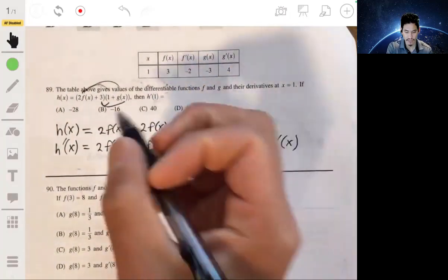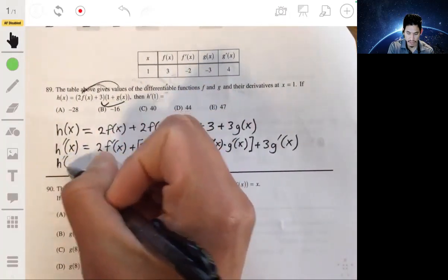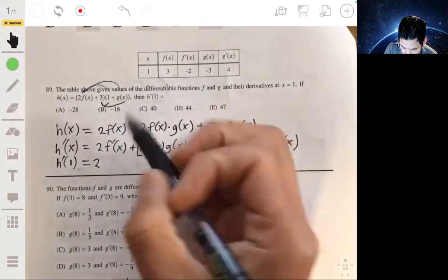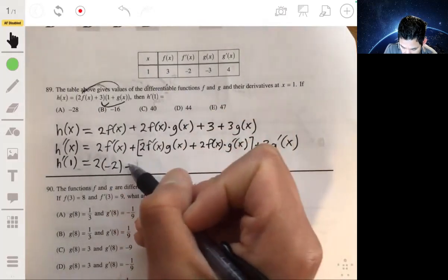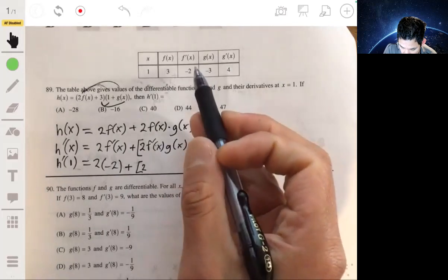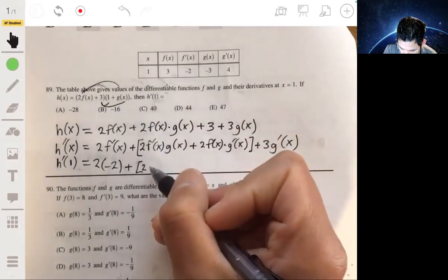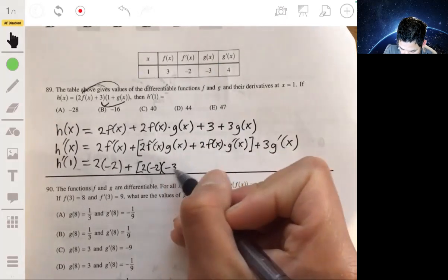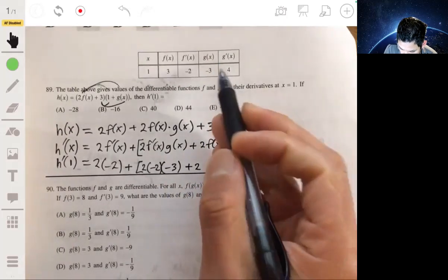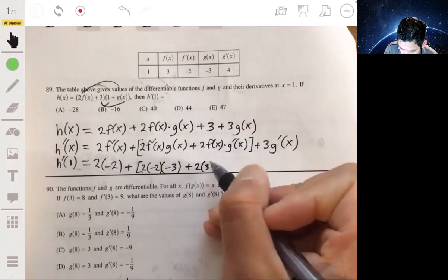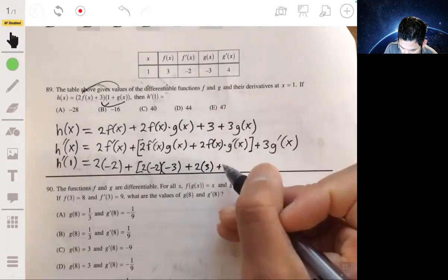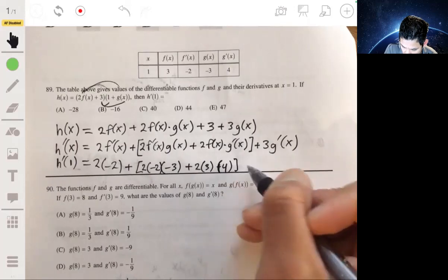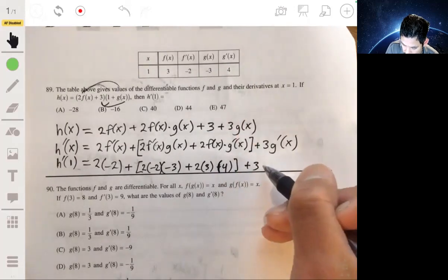And then we evaluate this for x is 1, so h prime of 1, just plug and chug. 2 times f prime of 1 given in the table, 2 times negative 2 plus 2 times f prime of 1, so 2 times negative 2, g of 1, g of 1 so times negative 3, plus 2 times f of 1, 3, plus g prime of 1, 4, times 4, plus 3 times g prime of 1 times 4.